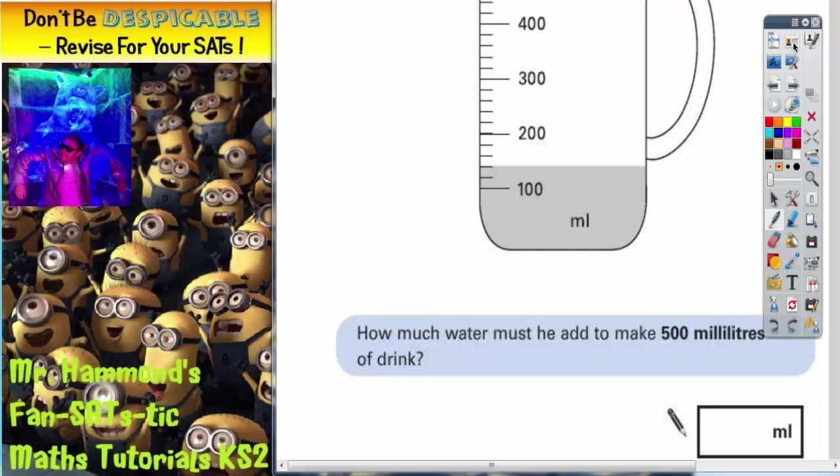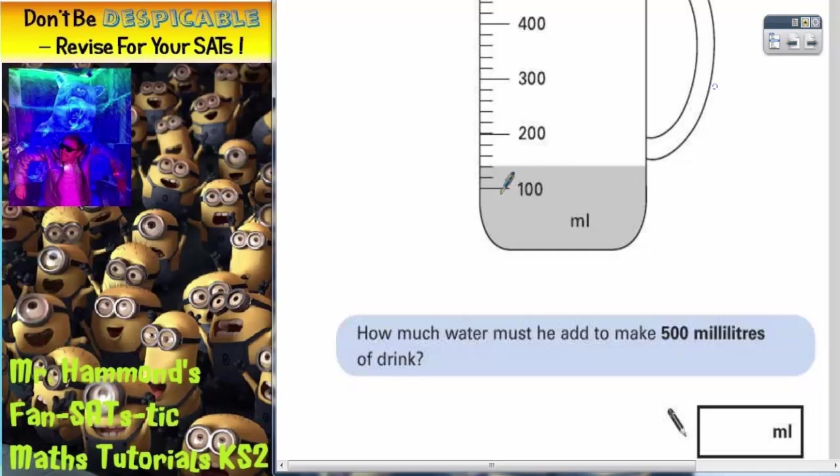Well, what we've got to do here, there's a couple of ways we could do it, is the first thing is we need to figure out what each small gap on this scale is worth. In other words, what each mini gap is worth. Now, between these two numbers here, there's 100 and 200. So from 100 to 200, that is a big gap of 100. But there are five mini gaps separating that 100.